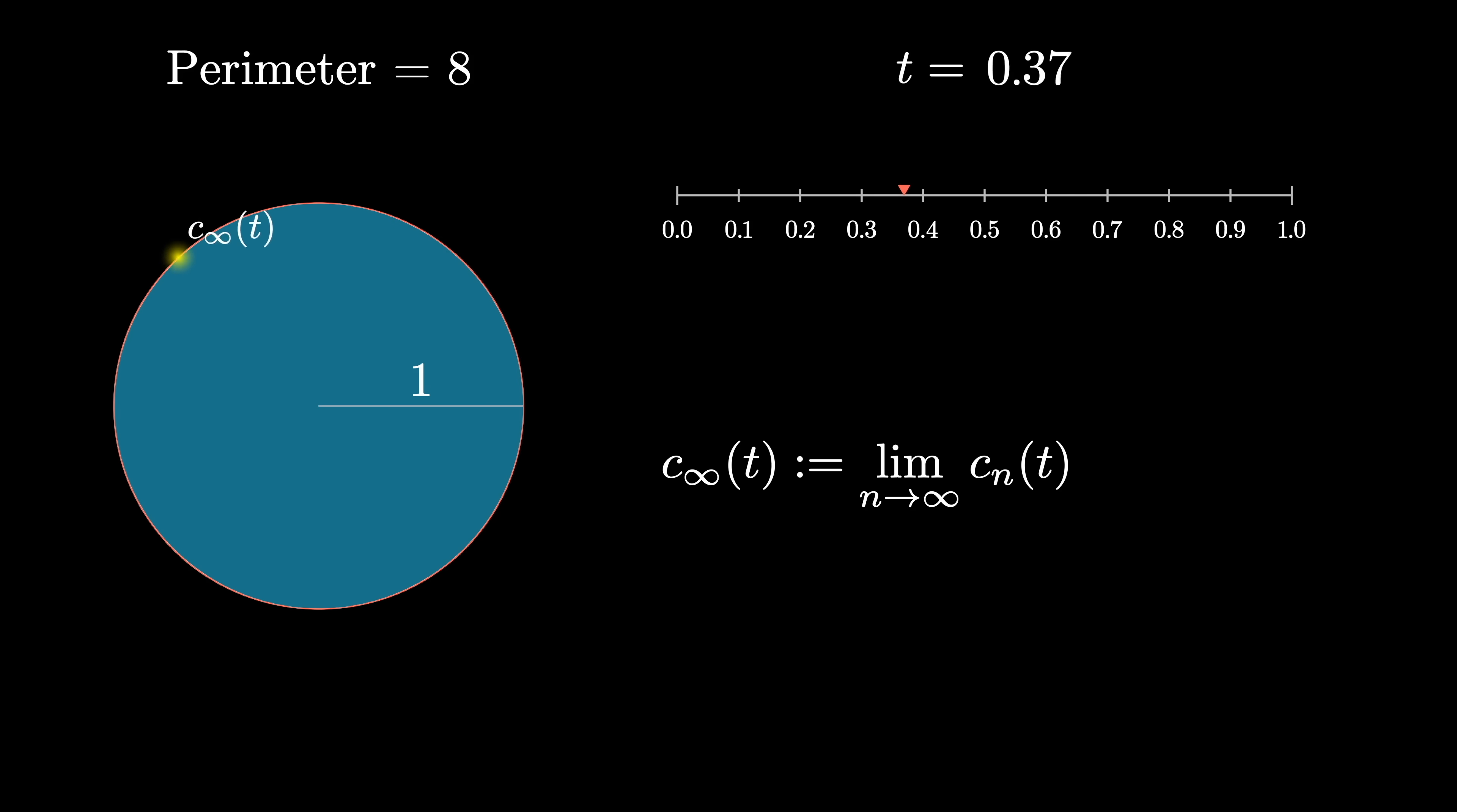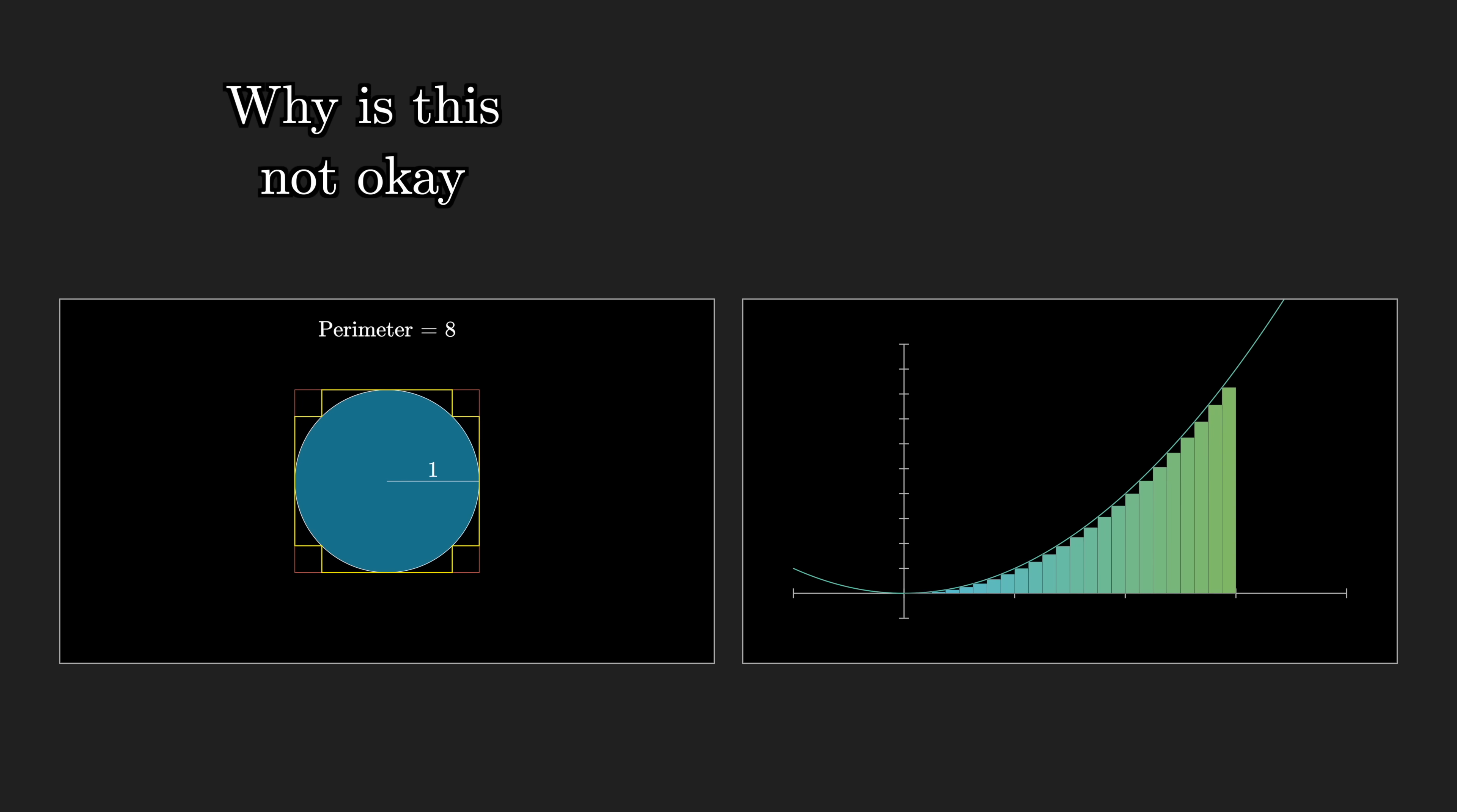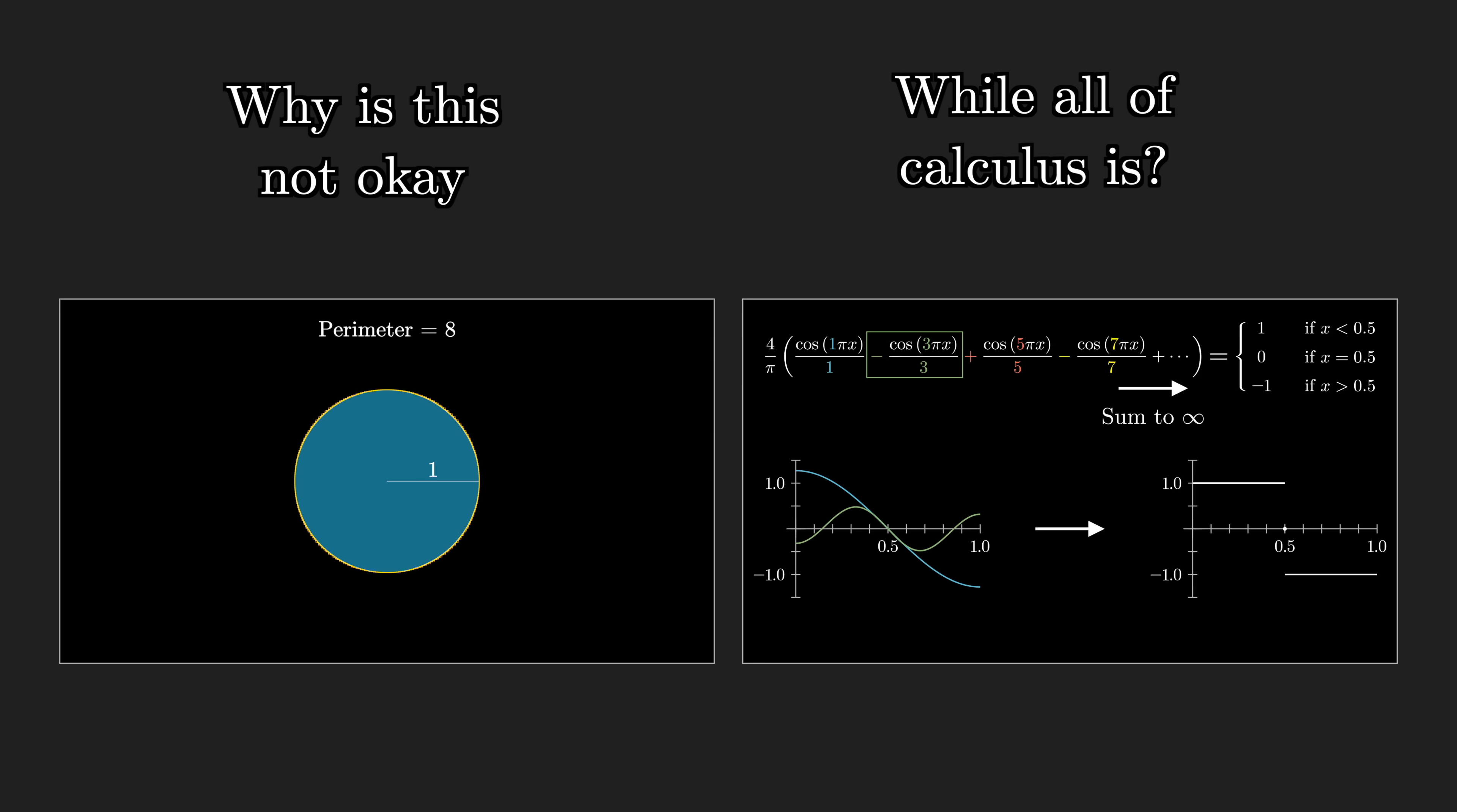So here's the point. That limiting function, c infinity, is the circle. It's not an approximation of the circle. It's not some jagged version of the circle. It is the genuine smooth circular curve whose perimeter we want to know. And what's also true is that the limit of the lengths of all of our curves really is 8, because each individual curve really does have a perimeter of 8. And there are all sorts of examples throughout calculus when we talk about approximating one thing we want to know as a limit of a bunch of other things that are easier to understand. So the question at the heart here is why exactly is it not okay to do that in this example?